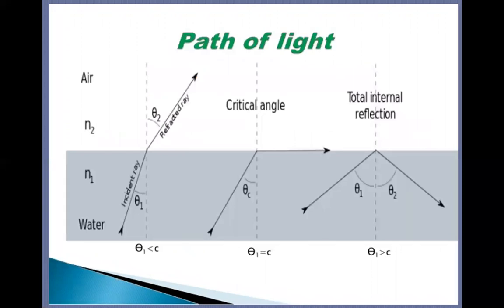We can understand this best from a diagram. If we take two mediums — the first is air and the second is water — water is a denser medium compared to air. When a ray of light comes from a pond or ocean, traveling from water to air, the angle of incidence is in the water. Theta one is the angle of incidence, and there will be refraction in air. The angle formed between the normal and the refracted ray is the angle of refraction, which is always greater than the angle of incidence.